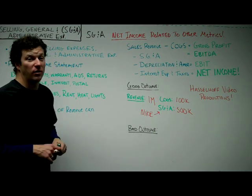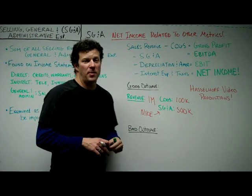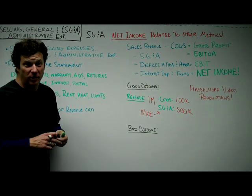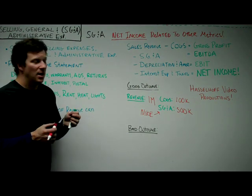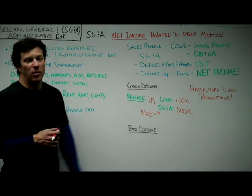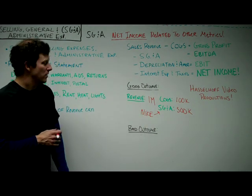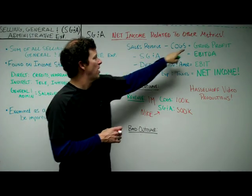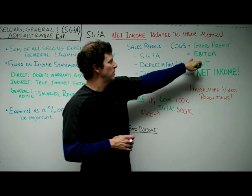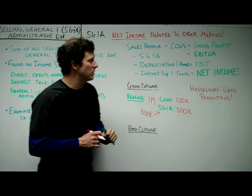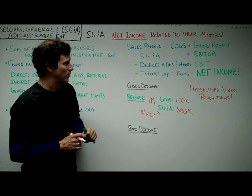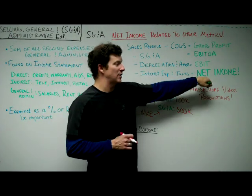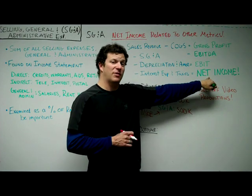Take Coca-Cola, for example — it doesn't cost them that much to create Coke, maybe a few cents for a can plus the cost of the aluminum. But they spend a lot on marketing and selling expenses. After you take gross profit and subtract selling general and administrative expenses, you get earnings before interest, taxes, depreciation, and amortization. Then if you take out depreciation, interest, and pay your taxes, what's left is your net income — that's your profit.